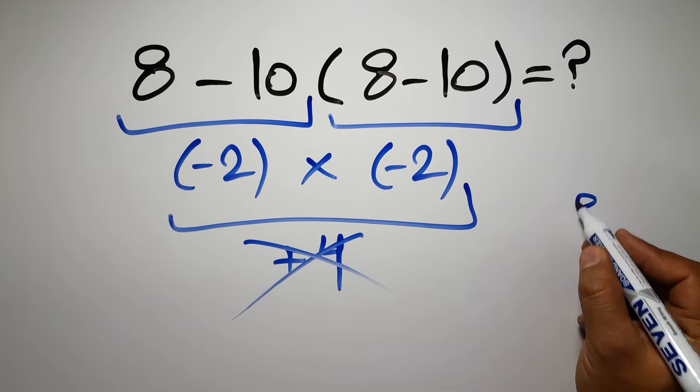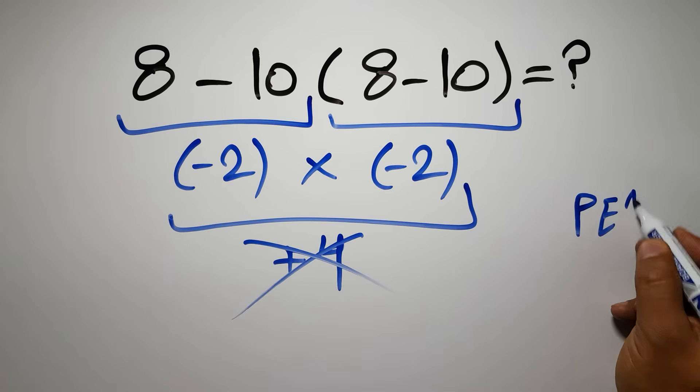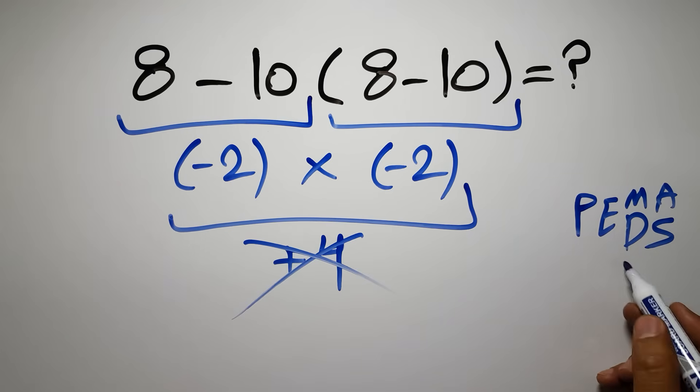first we have to do parentheses, then exponents, then multiplication or division, and finally addition or subtraction. Remember that multiplication and division have equal priority and we have to work from left to right, and the same applies to addition and subtraction.